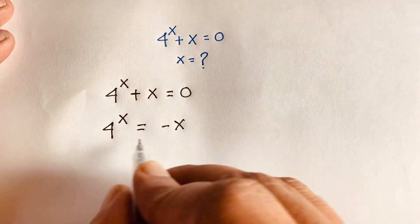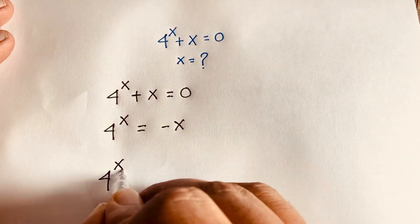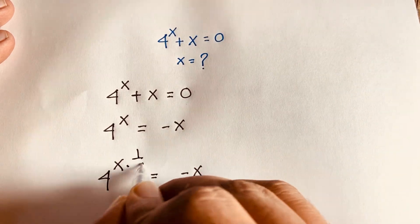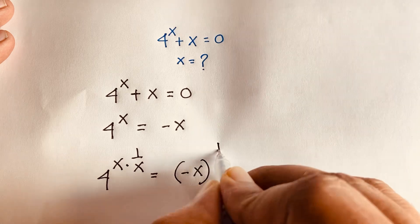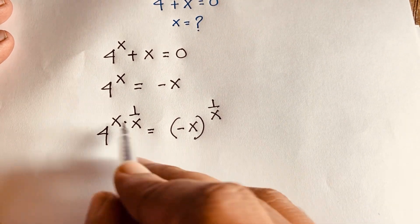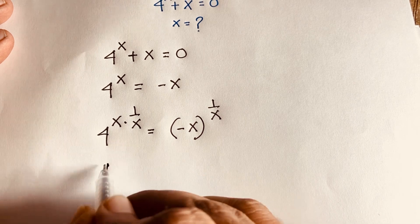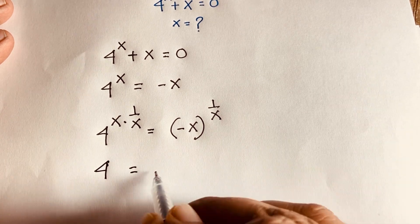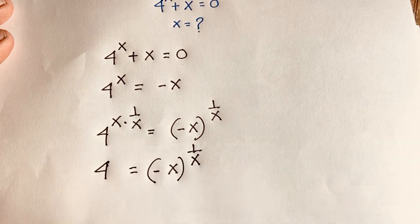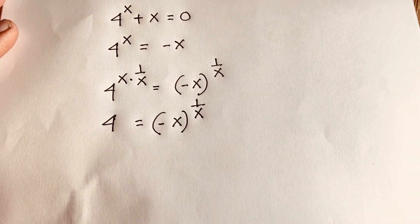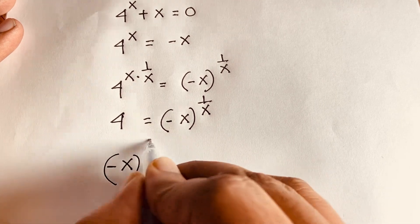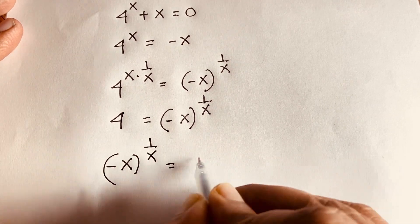Now we apply exponent 1 over x to both sides: 4 to the power x and negative x, both raised to the power 1 over x. The x exponents cancel out, giving us 4 is equal to negative x to the power 1 over x. Rearranging: negative x whole to the power 1 over x is equal to 4.